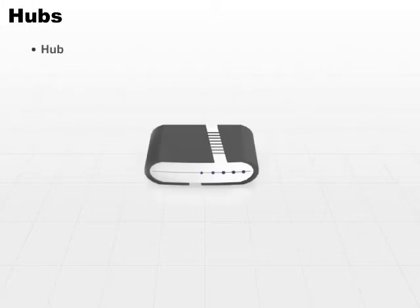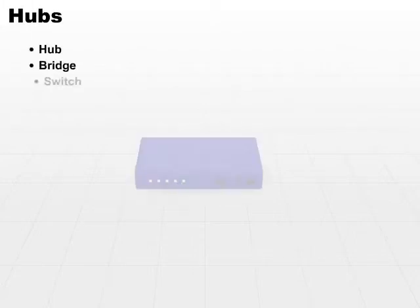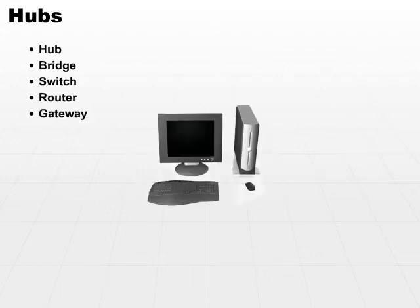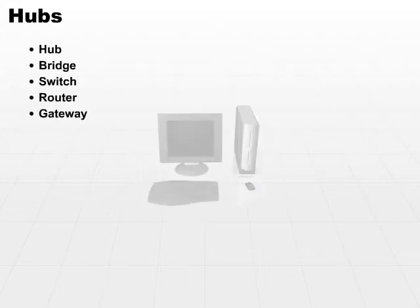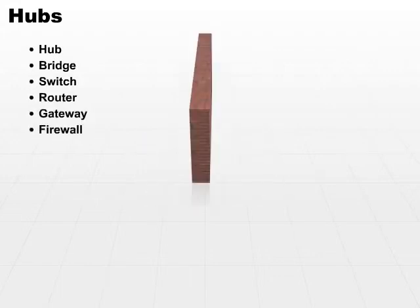We'll start off with our discussion of a hub, then we'll talk about a bridge, a switch, a router, a gateway, and then the full-blown firewall. Each of these devices are necessary to provide us with a different functionality or pulling two different pieces of our network together.